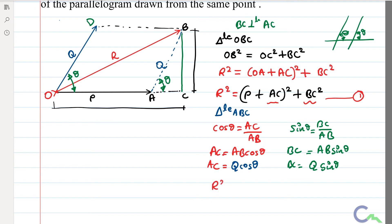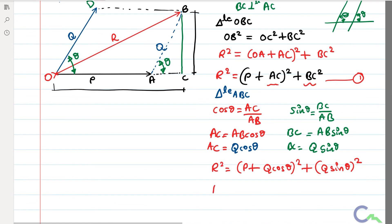So I can write R² = (P + Q·cos theta)² + (Q·sin theta)². Expanding this, R² = P² + 2PQ·cos theta + Q²·cos²theta + Q²·sin²theta, which simplifies to R² = P² + Q² + 2PQ·cos theta. You can use this formula to find the resultant.